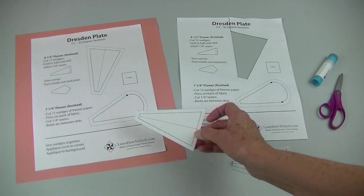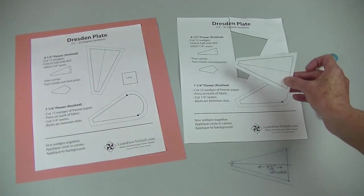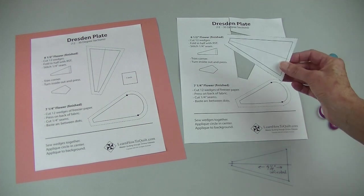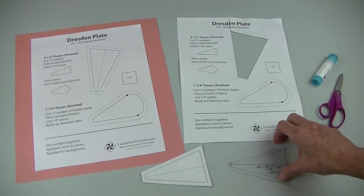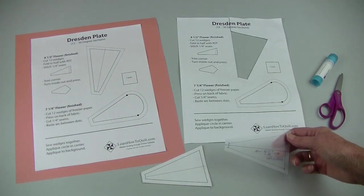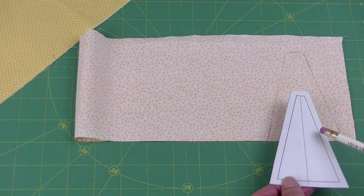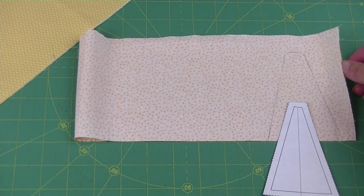Make a template of this wedge either by gluing cardboard to the back and cutting it out or you can use template plastic for this. I traced around this template on the wrong side of the fabric.